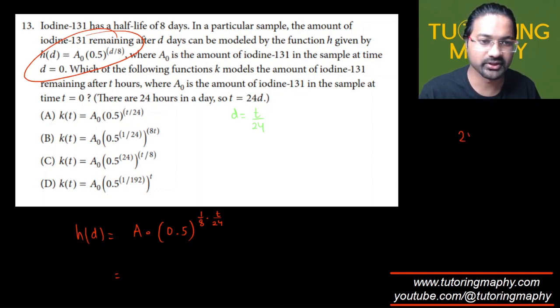What is 24 times 8? 24 times 8, times 4 is 32. This is 3 times 2 is 16, 17, 18, 19. So this is 192. So this will come out as A₀ times 0.5 raised to t over 192.